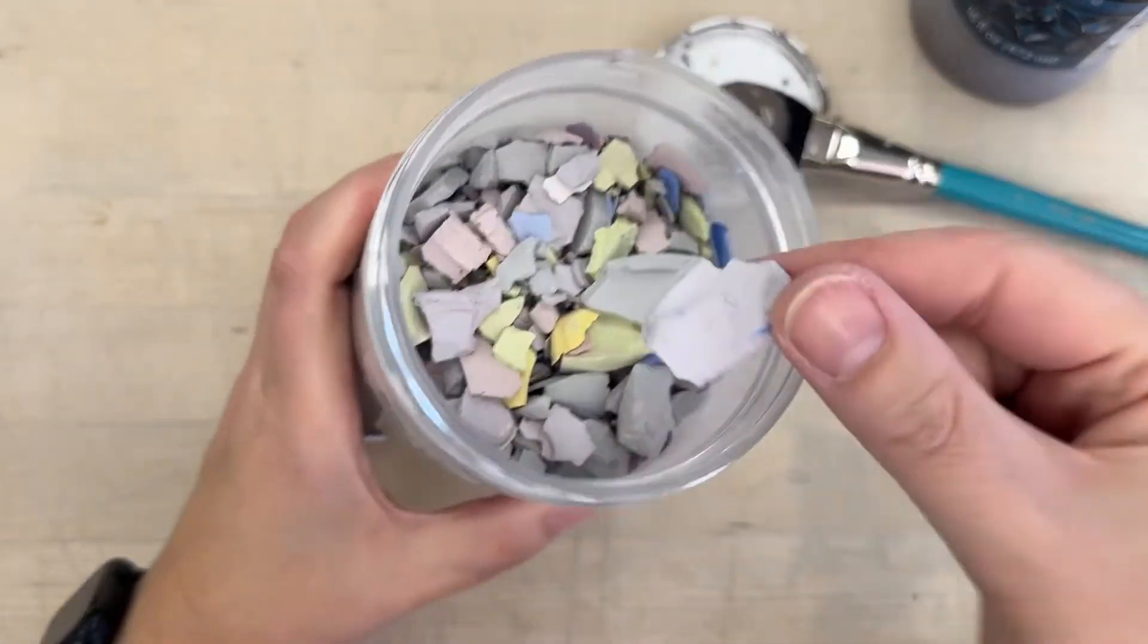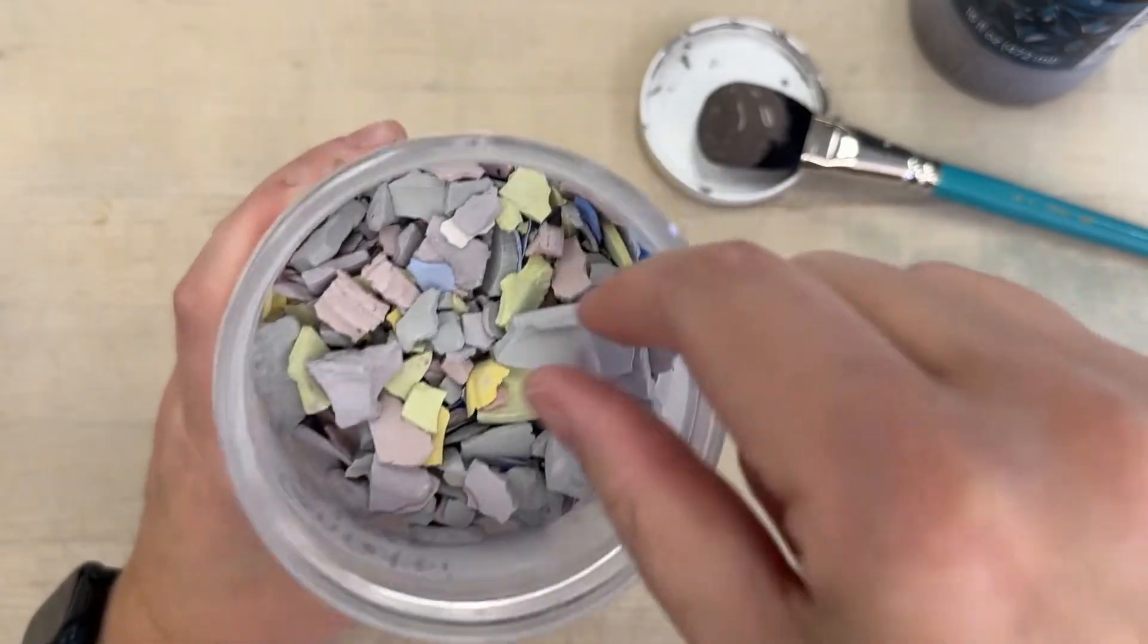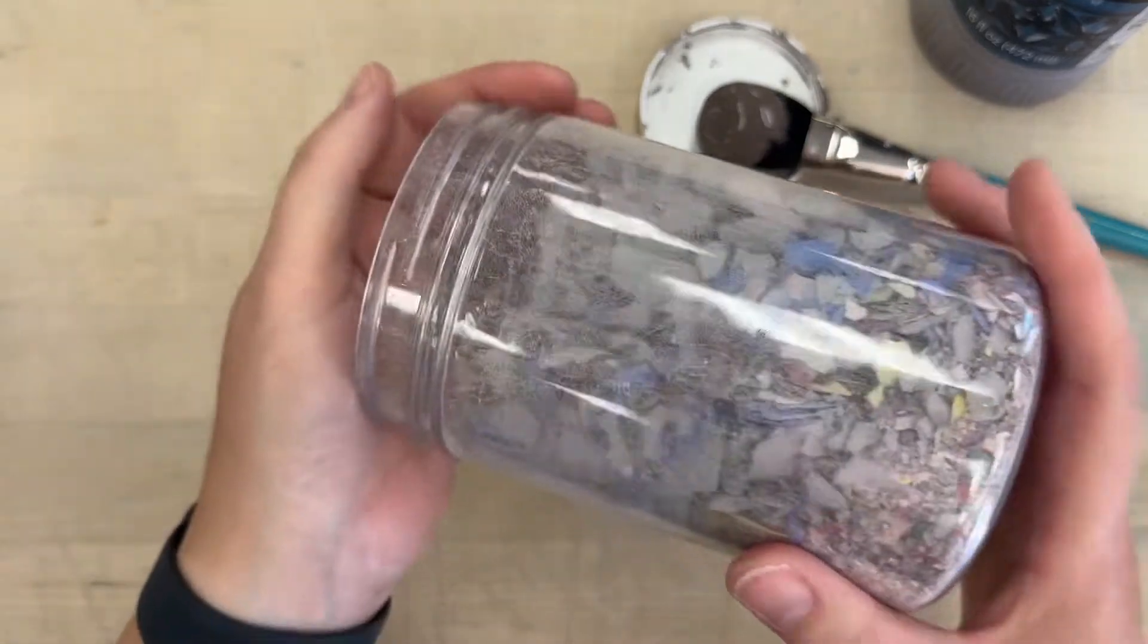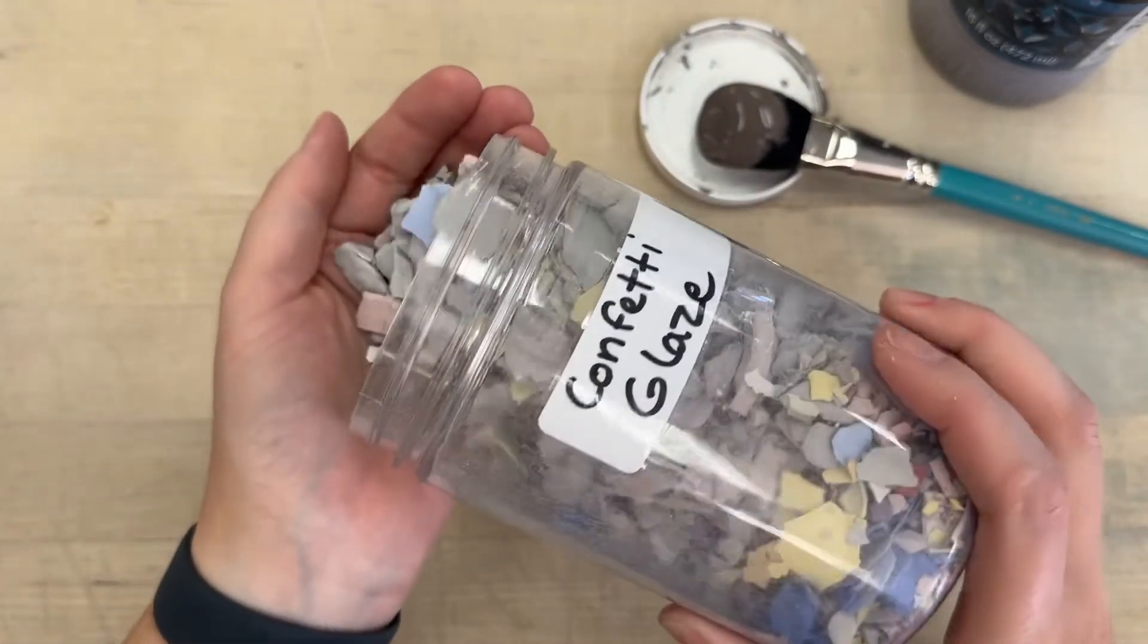When you do the confetti glaze, you want to avoid giant chunks. Giant chunks is not a good thing. And you kind of want to avoid the powder at the bottom. You're looking for that middle of the road stuff.